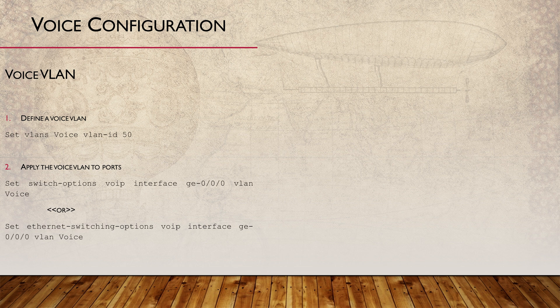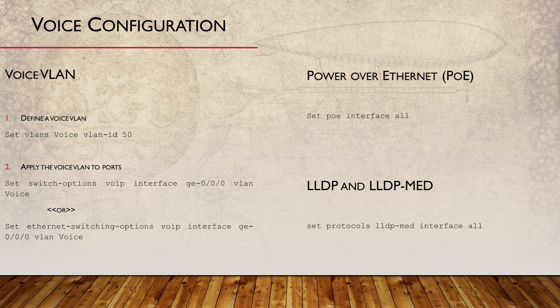Next, we power connected phones using PoE — this is very simple to configure. Under the PoE hierarchy, we list the ports we want PoE enabled on, and sometimes it's simpler to enable it on all ports. Finally, phones need a way to configure themselves, generally using CDP or LLDP. CDP is Cisco-specific, so we use the vendor-neutral option: LLDP-MED, which is LLDP with additional extensions. Under the protocols hierarchy, we enable LLDP-MED on whichever interface we choose, or on all of them at once. Cisco phones can connect to Juniper switches as long as they support LLDP-MED.